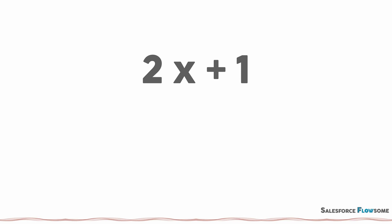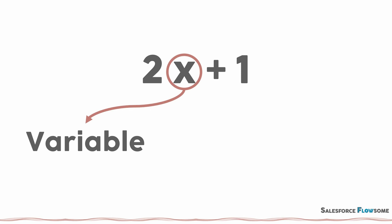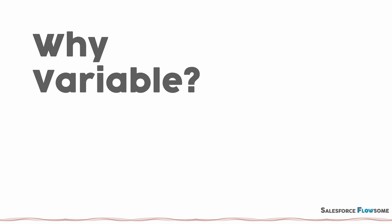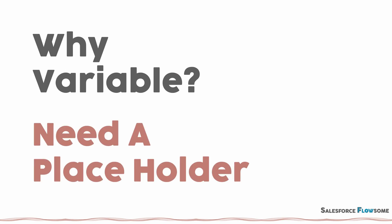Have you seen this type of equation before? X here is the best example of a variable. By definition, a variable is something that will change. Then why do we need variables? It is because there is a specific process we want to go through, but we don't know some details yet. So we create a placeholder for the details and we'll fill them in afterwards. That's right, a variable is exactly like a placeholder.